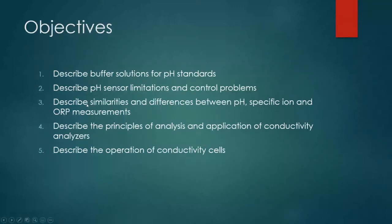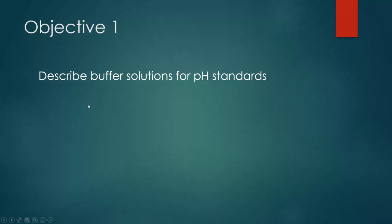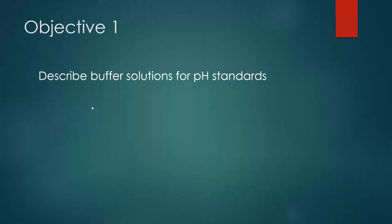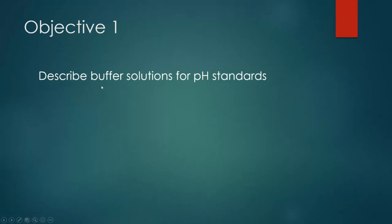Starting with Objective 1, we'll talk about buffer solutions for pH standards. Buffer solutions are the solutions we use to calibrate pH sensors. You can buy them in different pH values, and usually you'll buy them to make bookends on what your measurement value is. So if you're expecting to measure a pH of 7, you'd get one buffer on the low side and one on the high side — maybe a number 4 and a number 10 buffer.